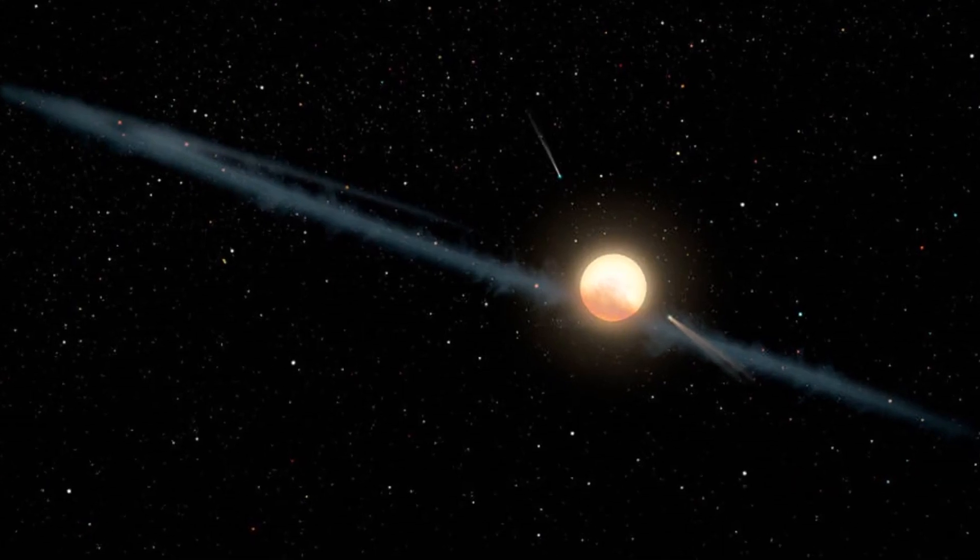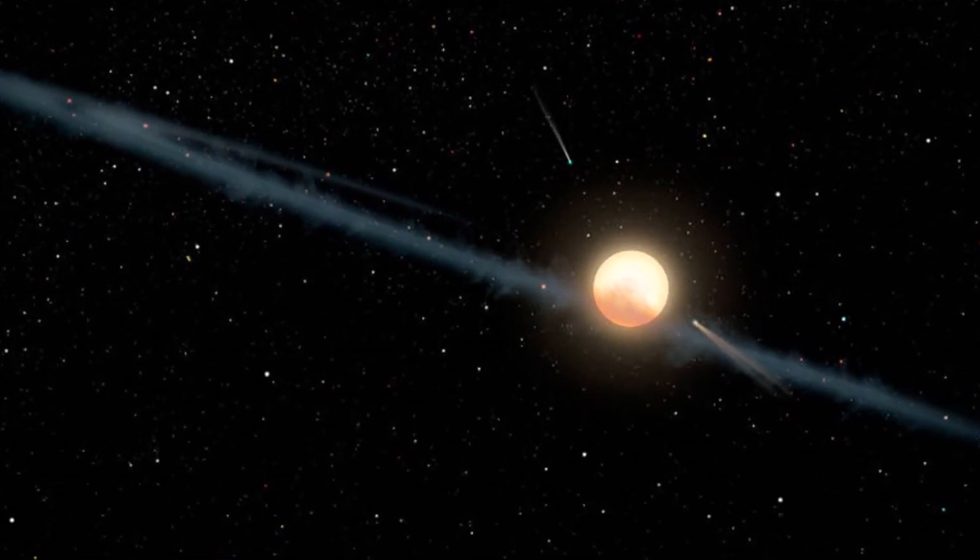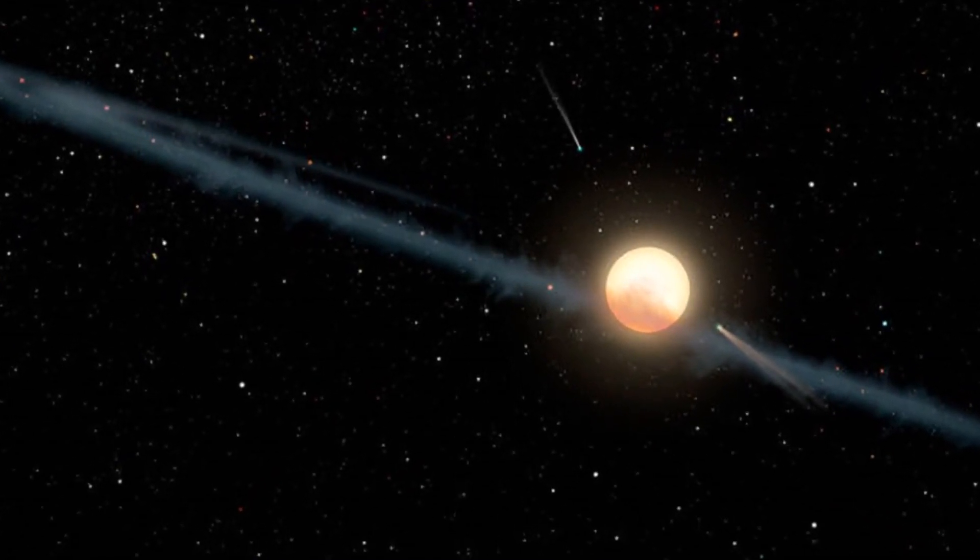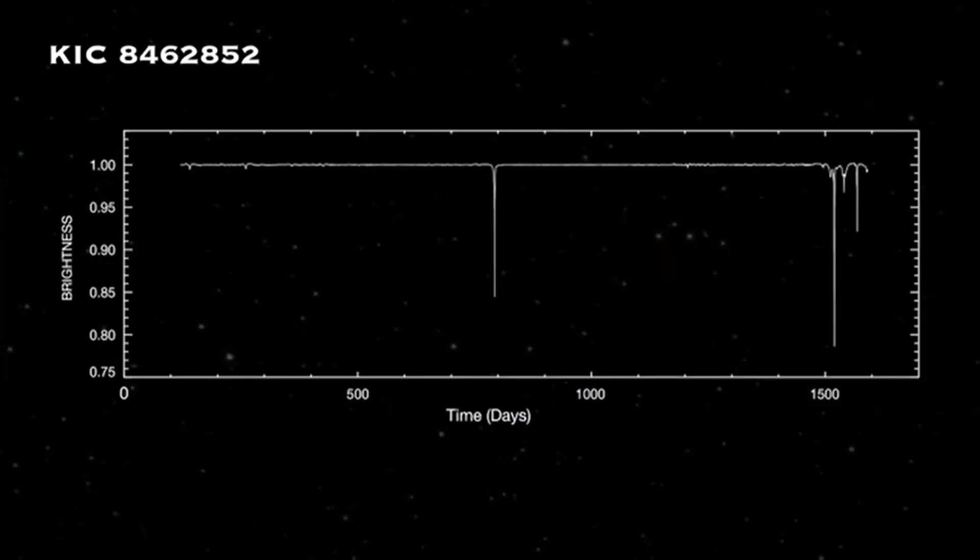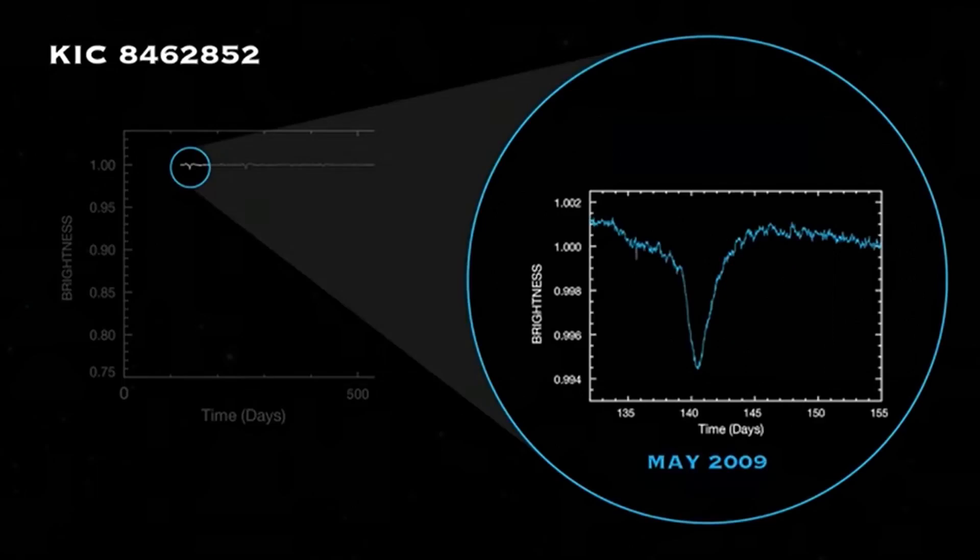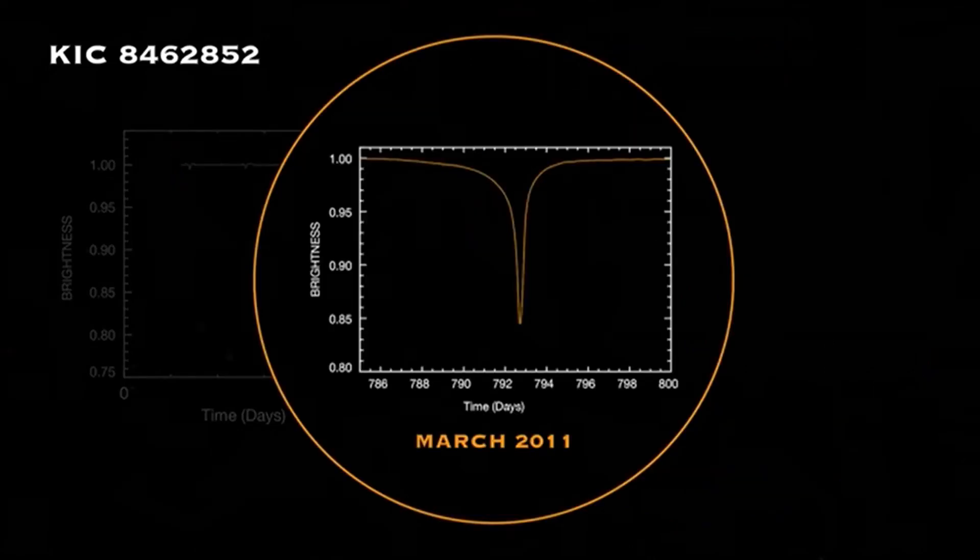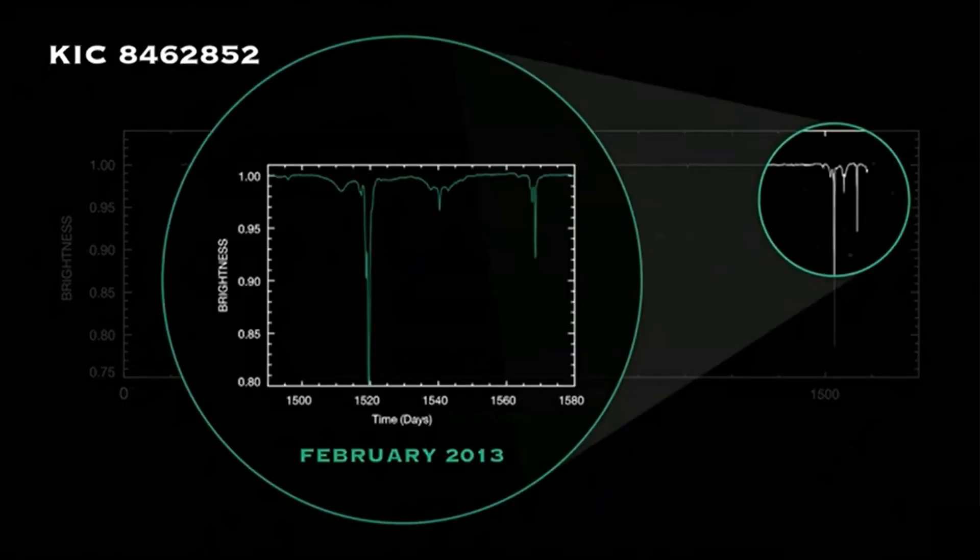Tabby star is an f-type main-sequence star located in the constellation Cygnus approximately 1500 light-years from Earth. What makes it special is the unusual fluctuations of flux of the star, up to a 22% dimming in its brightness.